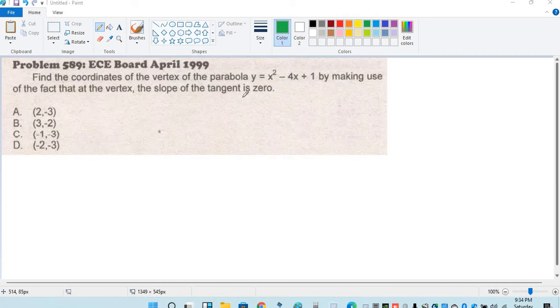Find the coordinates of the vertex of the parabola y equals x squared minus 4x plus 1, by making use of the fact that at the vertex, the slope of the tangent is 0.